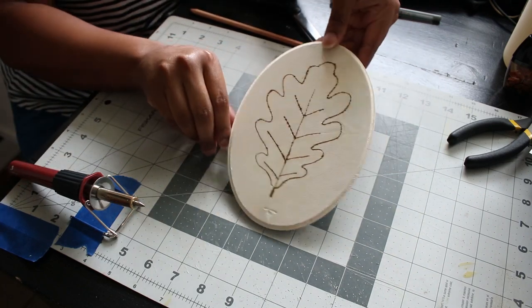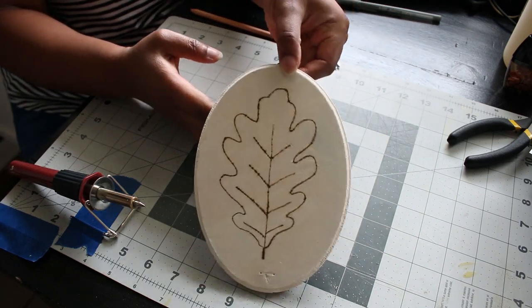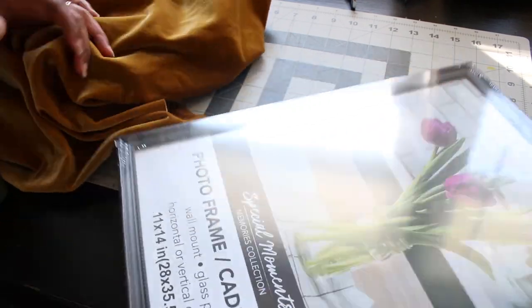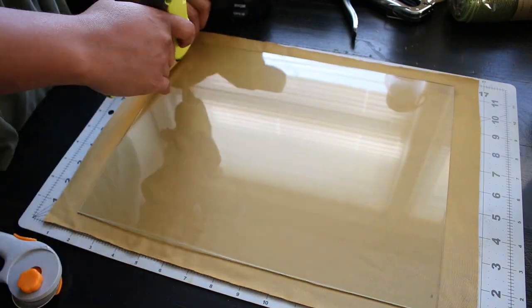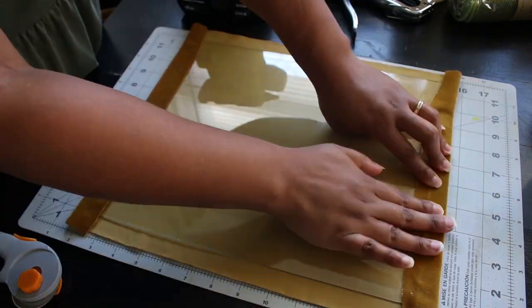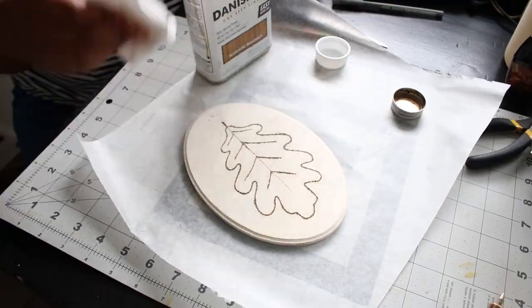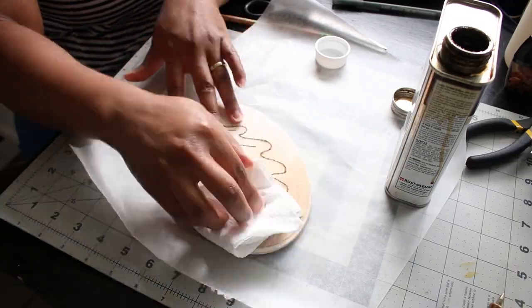Now, to make this into a sign, I'm using a Dollar Tree frame. This is the largest size and this leftover velvet fabric from my headboard project. I cut the fabric to size, glued it onto the glass, and I also stained that wood piece.